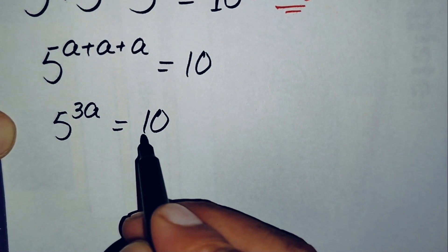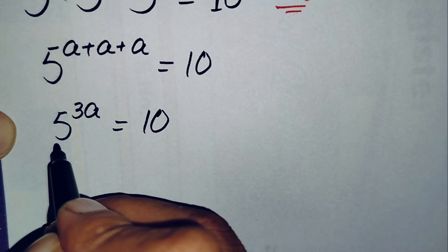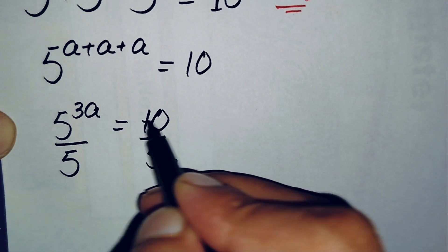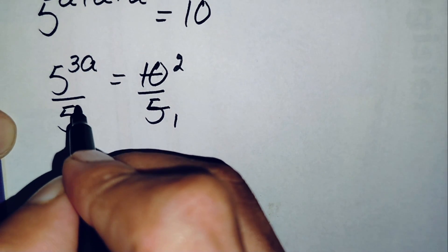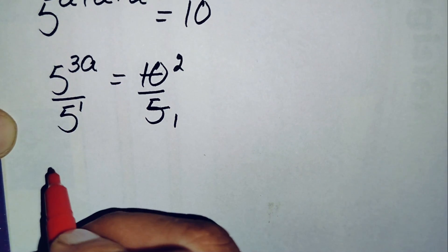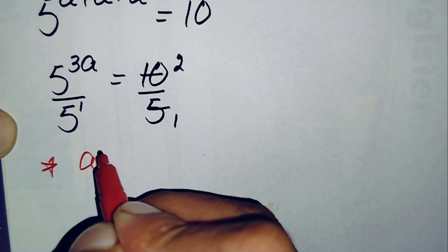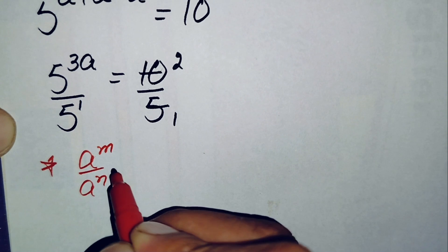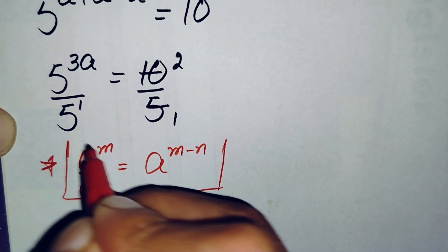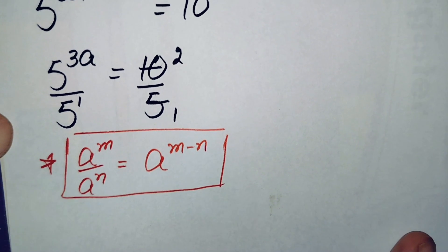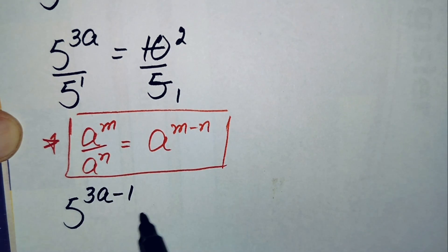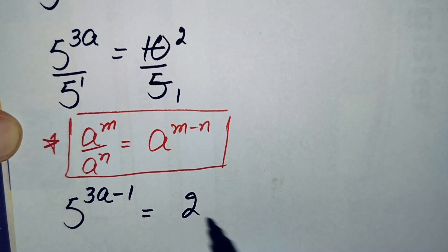Now, 10 and 5 are both divisible by 5, so we will divide both sides by 5. On the right-hand side, 10 divided by 5 gives 2. On the left-hand side, using the quotient rule — a^m divided by a^n equals a^(m−n) — this becomes 5 raised to power 3a minus 1, is equal to 2.